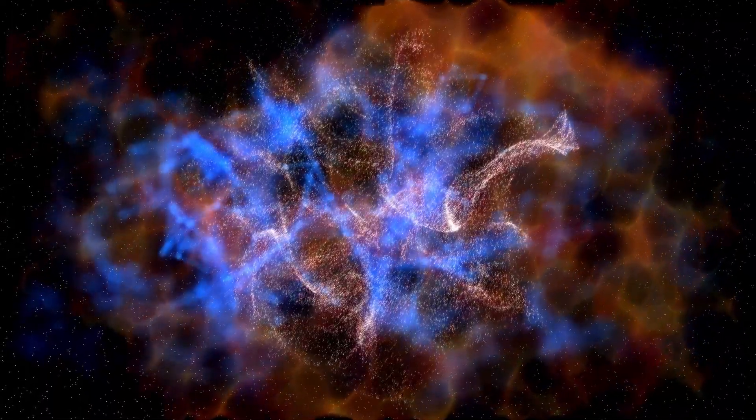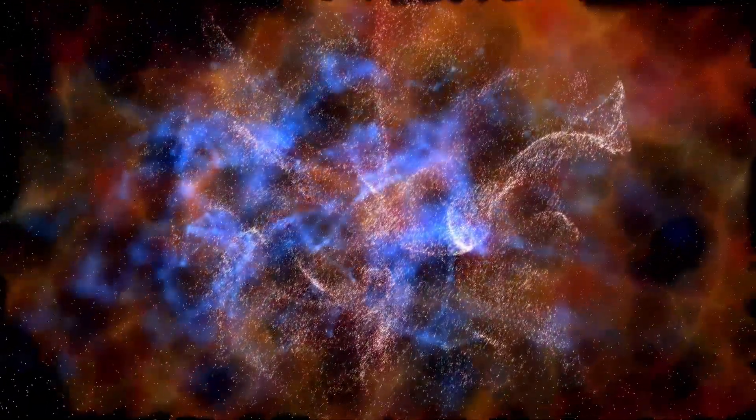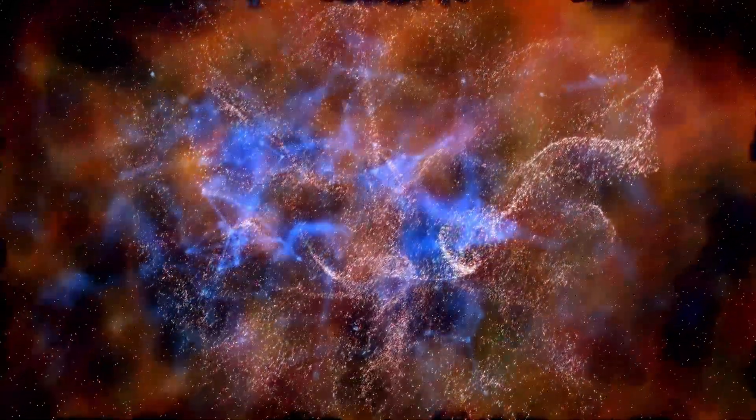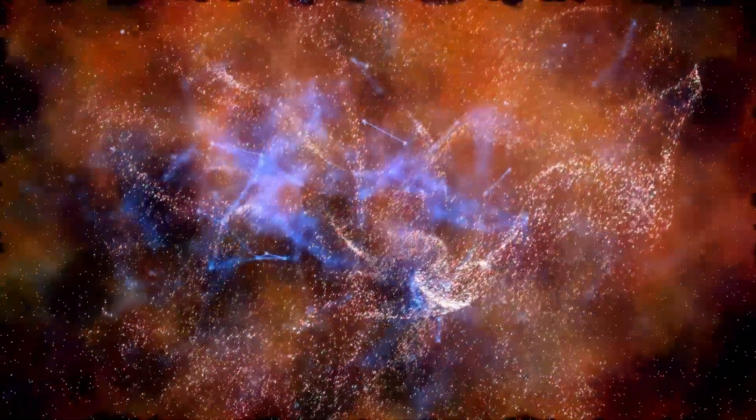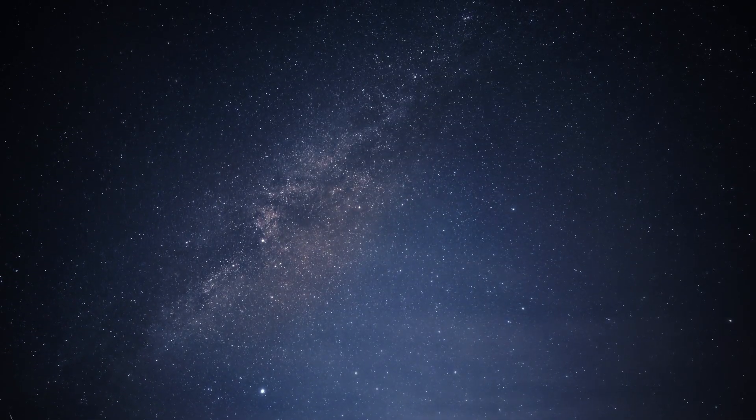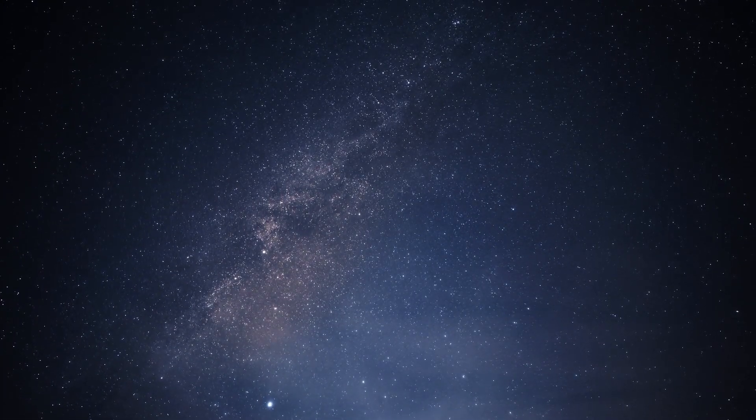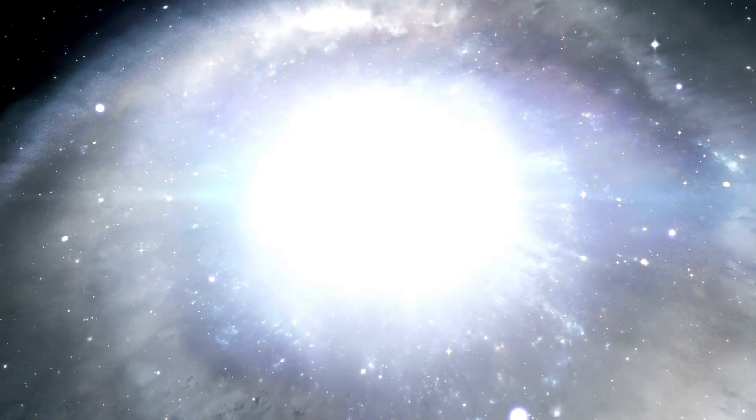Specifically, the outer regions of a galaxy lack sufficient stellar formation activity to produce the elements necessary for the formation of rocky planets. Meanwhile, the inner regions, where stars form and die at a rapid pace, present their own dangers. Frequent supernova blasts in these areas can illuminate the surrounding space, increasing the risks for any potential life that could exist there.